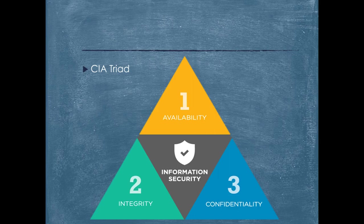Confidentiality in information technology is achieved with the help of encryption. When data is encrypted, it will have certain keys, and in order to decrypt the data you need those keys. The person who receives the content will then use their keys to decrypt it. Encryption is a common method to ensure confidentiality. User IDs, passwords, authentication mechanisms, biometric verifications, soft tokens, and security tokens are examples of implementations for ensuring confidentiality.